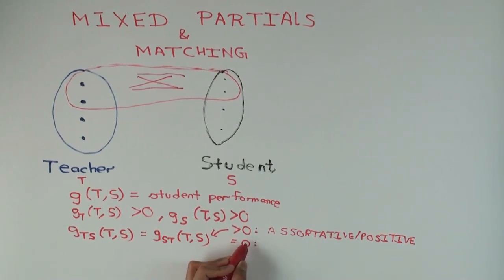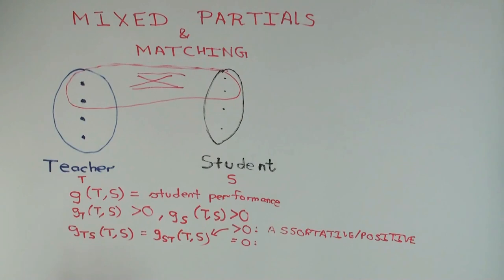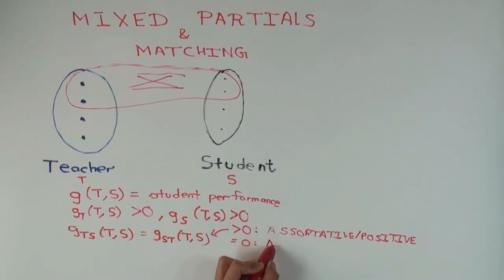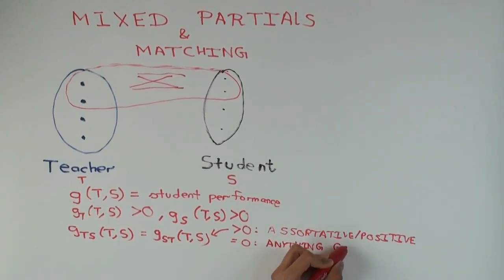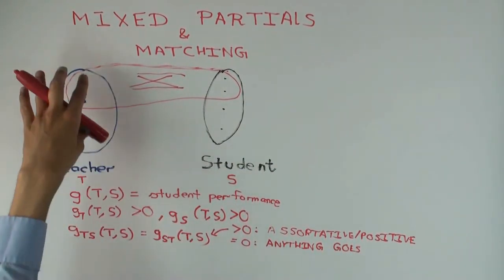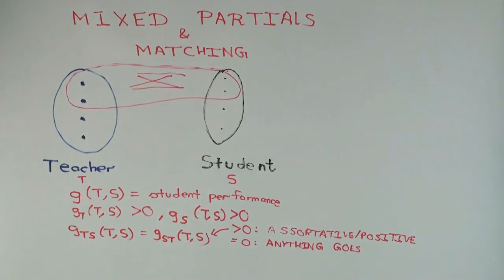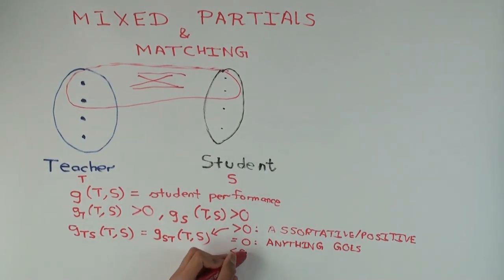What would g_ts equal to zero mean? It means the teacher role and the student role are additively separable — they don't really care who's with whom. Any matching is equally good as far as the total is concerned, because if it's zero then it's additively separable and the total is just the total of the teachers plus the total of the students regardless of how they're paired.